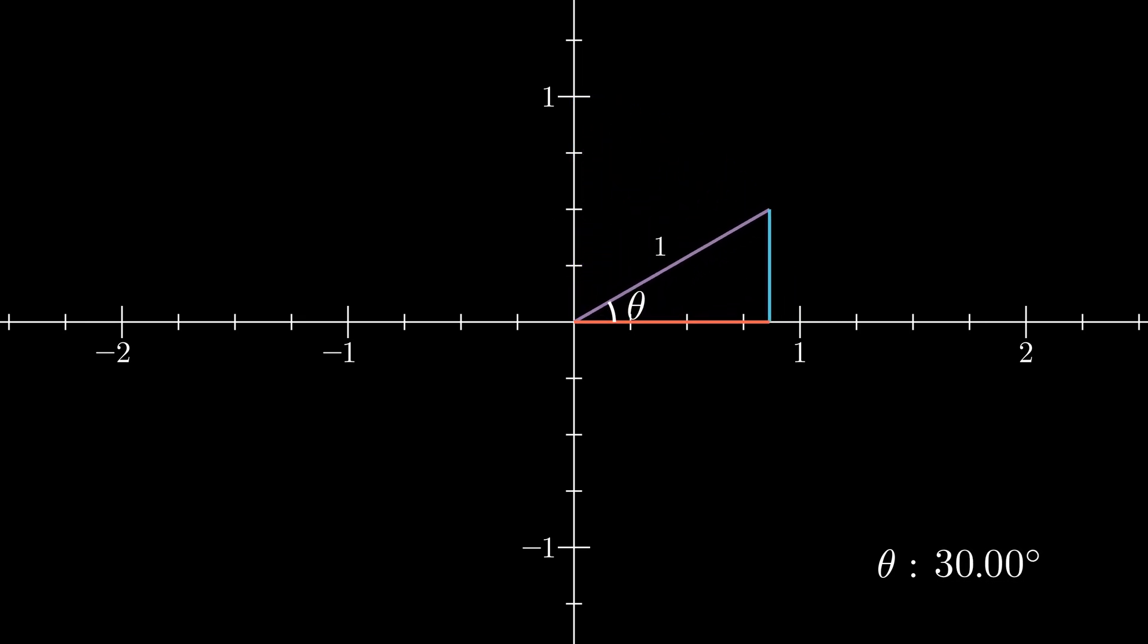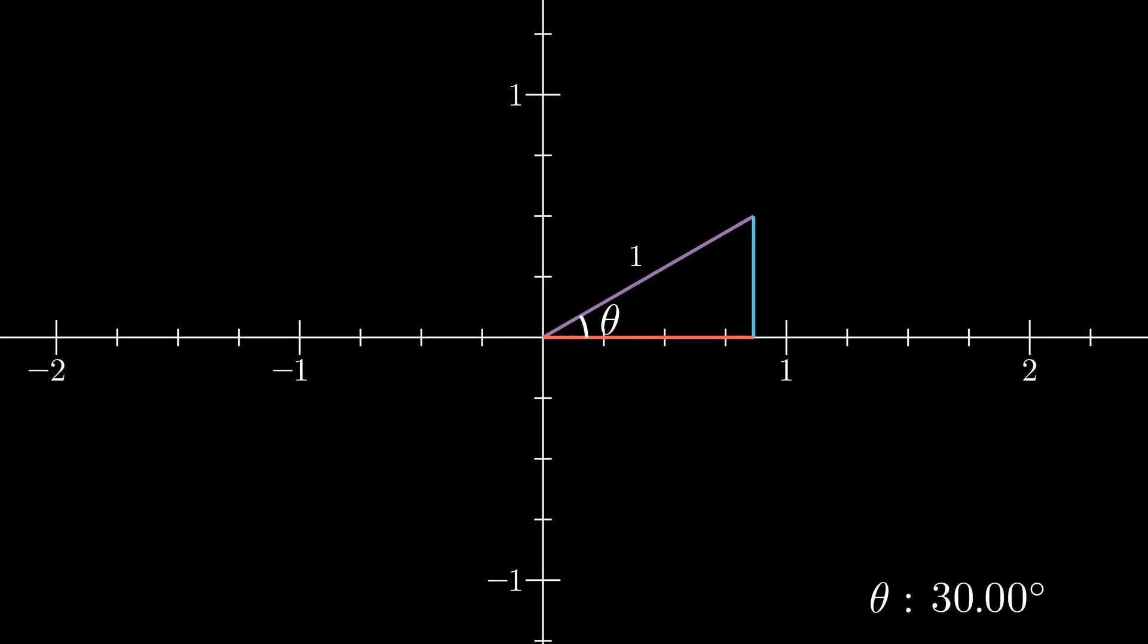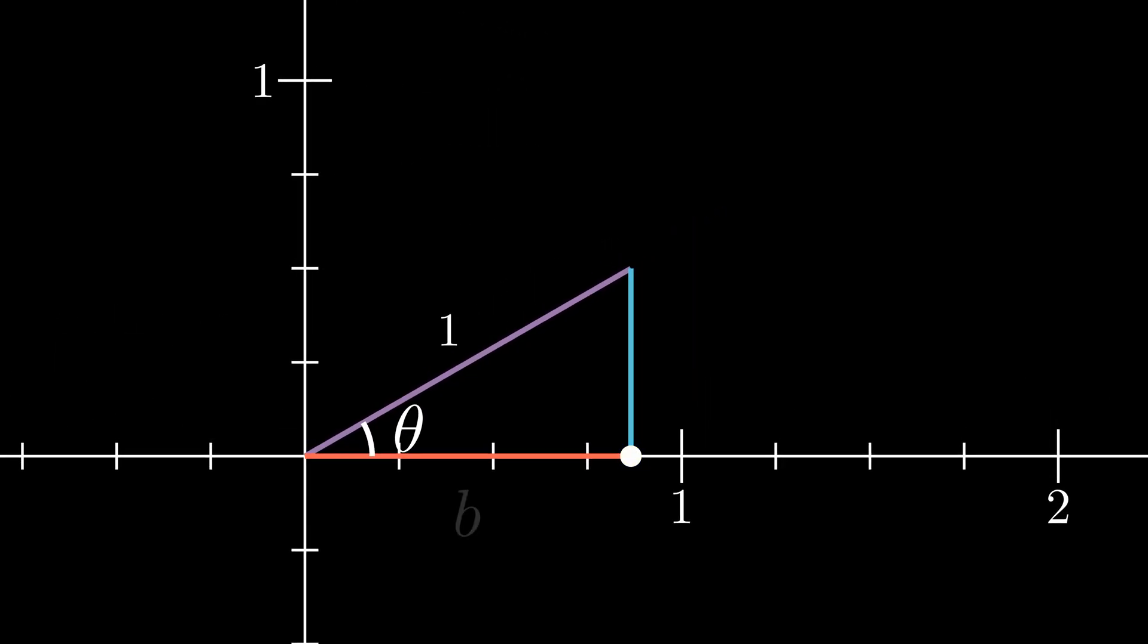So on the coordinate plane, what are the coordinates of the points of our triangles? Well, this point in the bottom right has no height and has traveled the base of the triangle rightward, so its coordinates are (b, 0). This point in the top right is directly above it, so it also has an x-coordinate of b, but it has also risen the height h of the triangle, so its coordinates would be (b, h). Earlier we defined both of these quantities in terms of θ, so its coordinates can also be written (cos θ, sin θ).